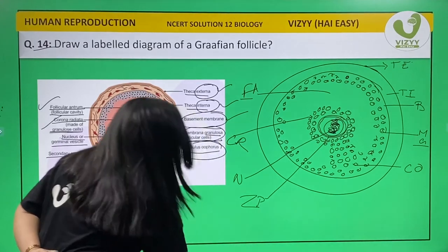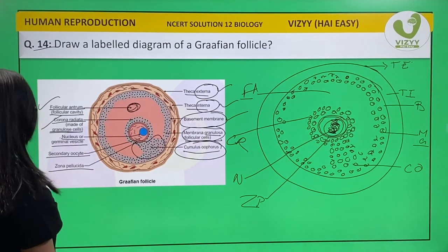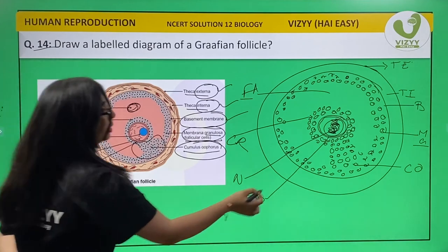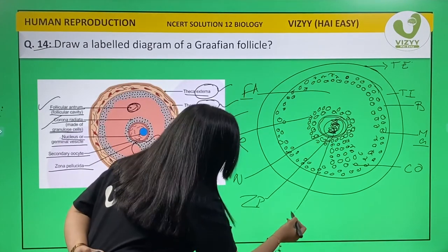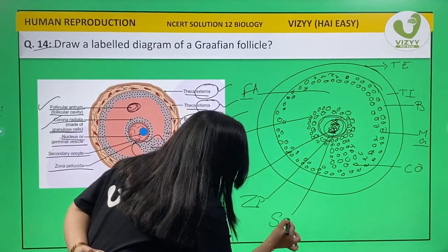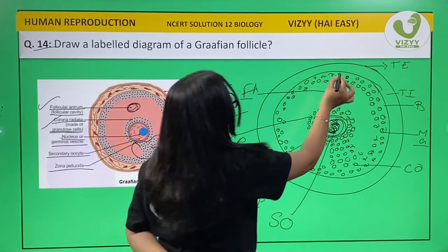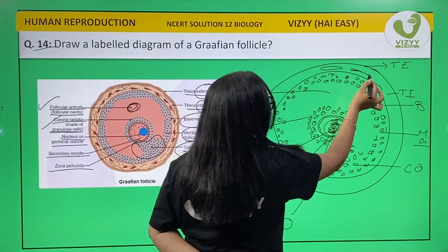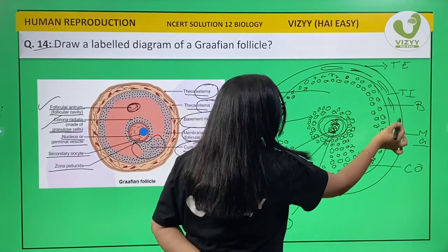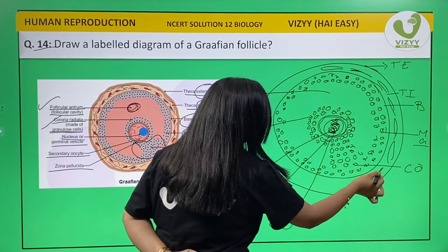Lastly, the outer covering of the oocyte is known as zona pellucida. We are done. This is our secondary oocyte. Remember, this is a very easy diagram but you need to remember all the labels.